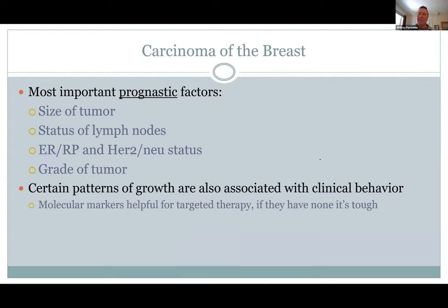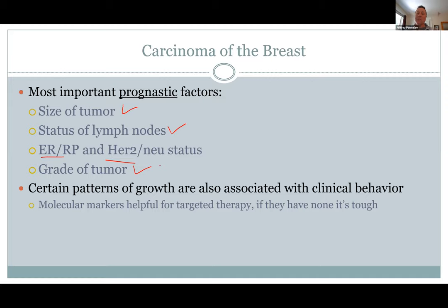Prognosis depends on: tumor size, cellular grade (how differentiated or abnormal the cells look), whether lymph nodes are involved, and whether the cancer has estrogen or HER2 receptors — because if it does, targeted drugs are available. If the cancer has none of these targetable receptors, prognosis is not as good, as the cancer is more likely to spread and grow unchecked.